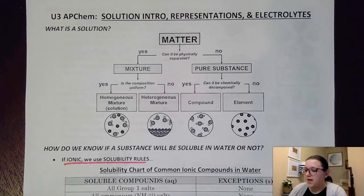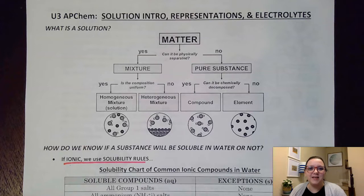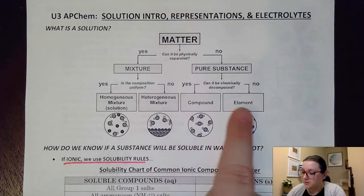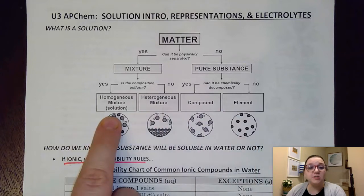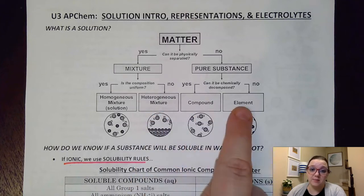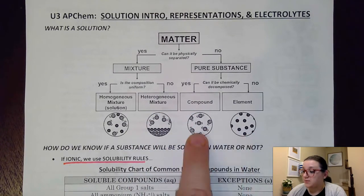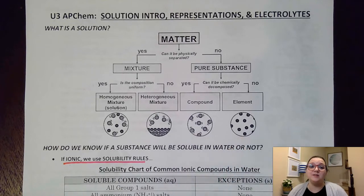To start us off, here we have a chart that probably looks familiar — it's our basic classification of matter flowchart. You'll notice our four categories down here of substances: homogeneous mixtures, solutions, heterogeneous mixtures, compounds, and elements. Compounds and elements are pure substances — they only have one type of particle in them.